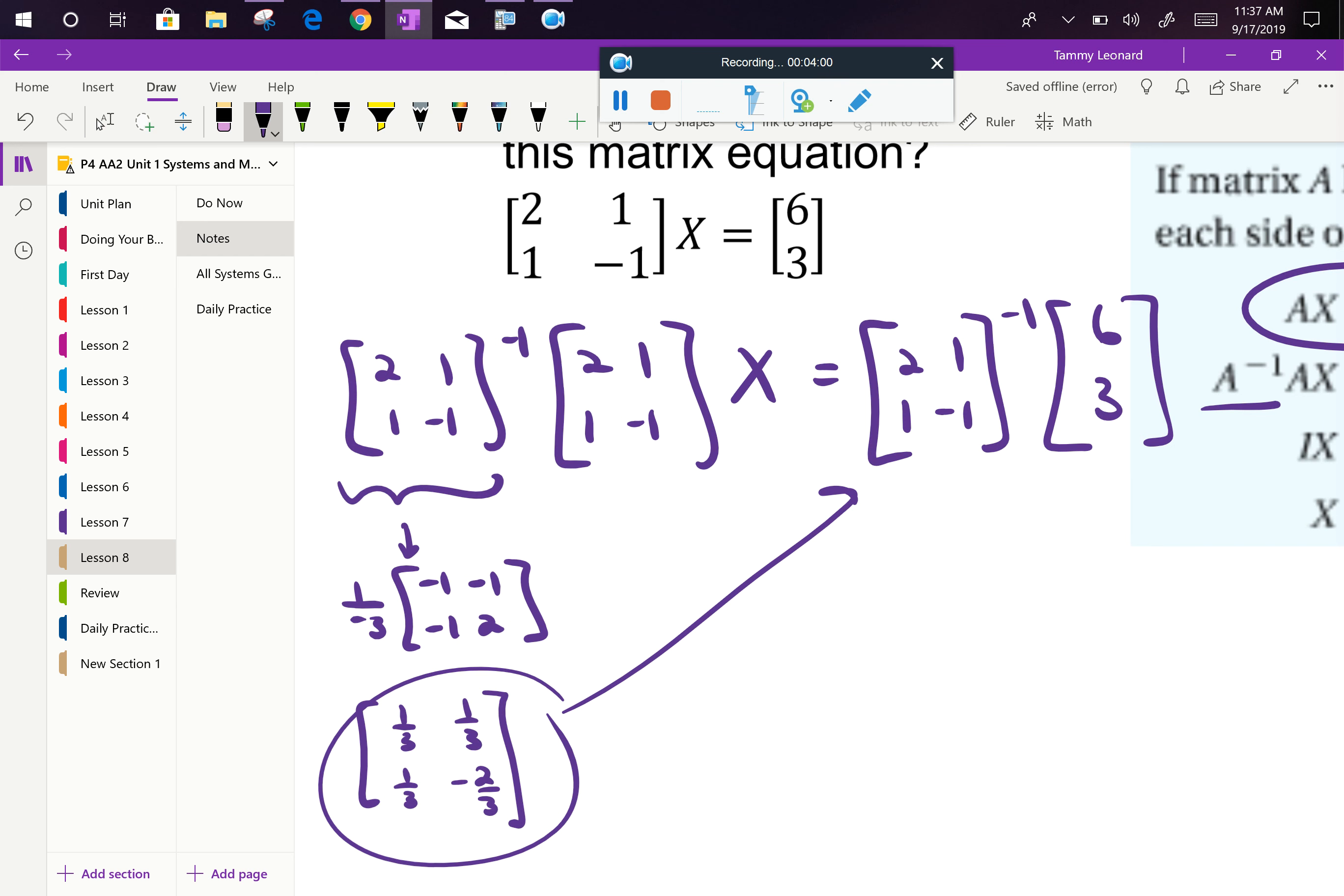Now, I'm doing a 2 by 2 times a 2 by 1. Do I have to do that by hand? Nope. You only have to multiply 2 by 2s by each other by hand. This you're allowed to use the calculator for. So you had to find the inverse by hand because it was a 2 by 2, but you get to then plug that into your calculator and multiply it by the other matrix, the 6, 3. What do we get?